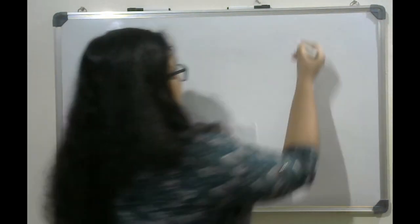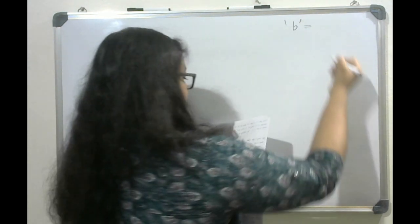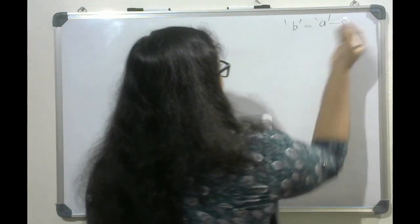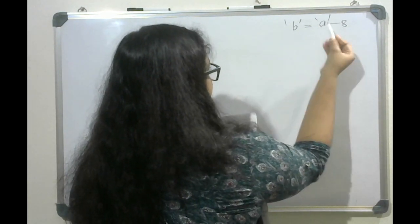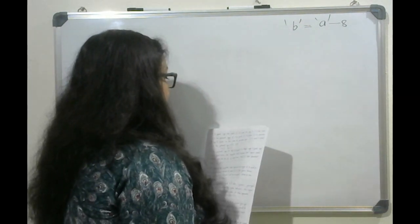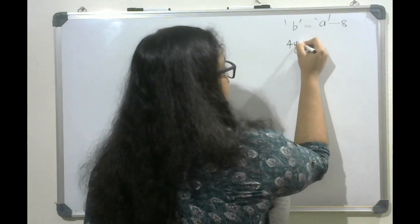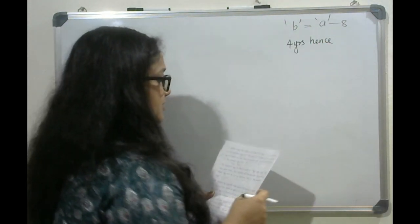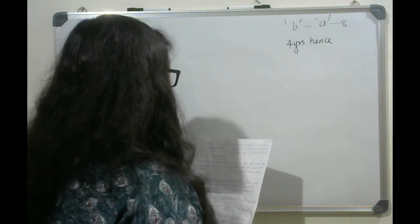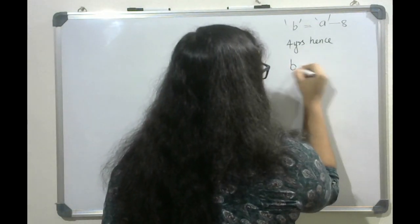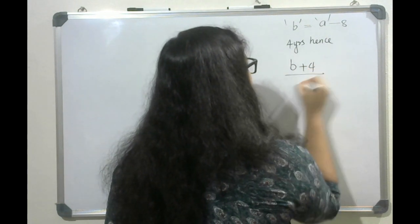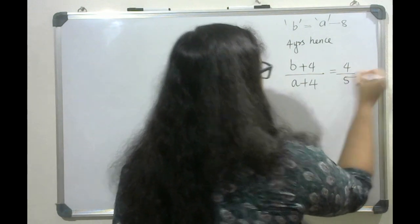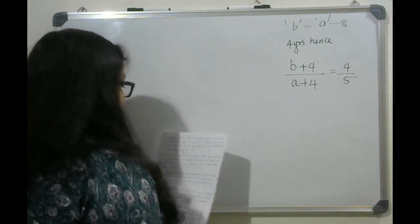Moving on to the next question. The present age of Bob equals his age 8 years ago in some ratio. We can consider Bob's age as B. 4 years hence, the respective ratio between Bob's age and another person's age is 4 is to 5.